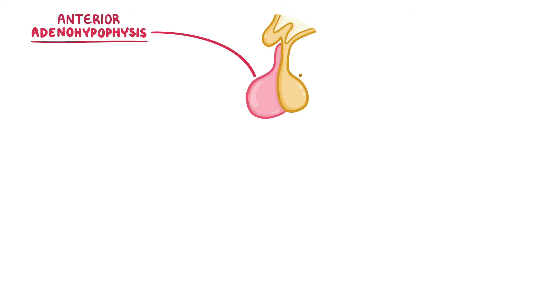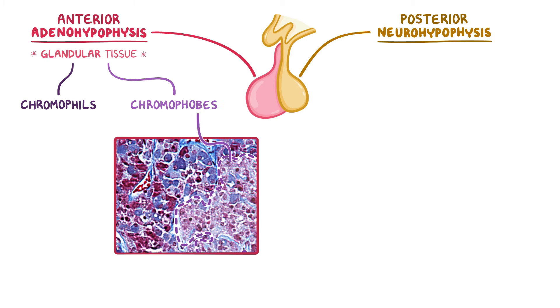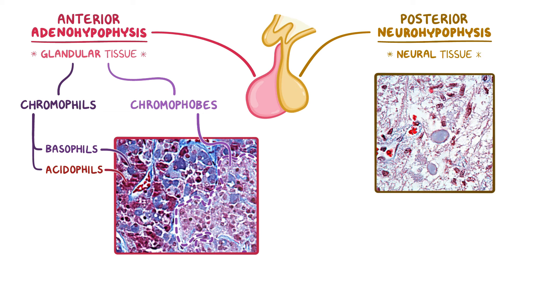As a quick recap: the pituitary gland has two main parts — the anterior adenohypophysis and the posterior neurohypophysis. The anterior pituitary is made primarily of glandular tissue that's broadly split into chromophils and chromophobes. The chromophils are further divided into basophils that stain purplish-blue and acidophils that stain dark red. The posterior pituitary is primarily neural tissue. Under high magnification, the distended nerve terminals called herring bodies can be seen, which release either oxytocin or ADH to be carried away by nearby capillaries.